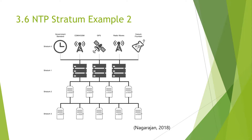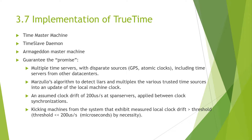TrueTime is implemented by a set of time master machines per data center and a time-slave daemon per machine. The majority of masters have GPS receivers with dedicated antennas. These masters are physically separated to reduce the effects of antenna failures, radio interference, and spoofing. The remaining masters, referred to as Armageddon masters, are equipped with atomic clocks. The challenging part in implementing a TrueTime API lies in the guarantees it must provide: the absolute time must never be outside the TrueTime interval on any server in the system. If this happens, absolute ordering of events is lost.